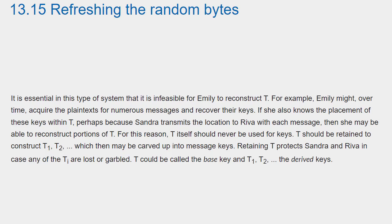It is essential in this type of system that it is infeasible for Emily to reconstruct T. For example, Emily might over time acquire the plain texts for numerous messages and recover their keys. If she also knows the placement of these keys within T — perhaps because Sandra transmits the location to Reva with each message — then she may be able to reconstruct portions of T. For this reason, T itself should never be used for keys. T should be retained to construct T1, T2, which then may be carved up into message keys. T could be called the base key, and T1, T2 the derived keys.